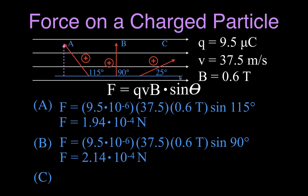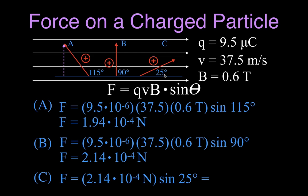Now for case C. Once again we use the same values of Q times V times B, but this time we multiply by the sine of 25 degrees. The angle is reduced here to 25 degrees, and again we're finding the component of the velocity that's perpendicular to the magnetic field — which is less than in the previous cases — so the force is going to be less. The result is 9.04 times 10 to the minus 5 newtons. So to recap: full force when perpendicular (2.14×10⁻⁴), a little less at 115° (1.94×10⁻⁴), and even less as the angle gets smaller at 25° (9.04×10⁻⁵).